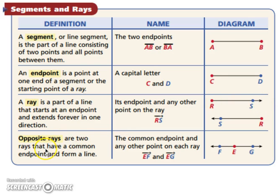Opposite rays are two rays that have a common endpoint and form a line. So notice here, they have a common endpoint E, but they go in opposite directions. If they go in opposite directions, they'll make a line.